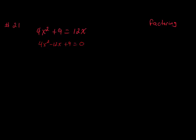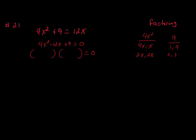When we have a coefficient that's not equal to 1, there are several ways to factor. We're going to find factors of 4x squared — those are 4x and x, or 2x and 2x. Then the factors of 9 are 1 and 9, or 3 and 3. We need to figure out which combination works. I'm going to try 2x and 2x, and 3 and 3 to see what happens.